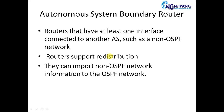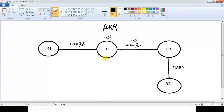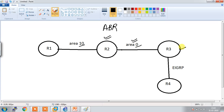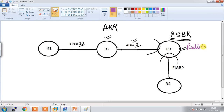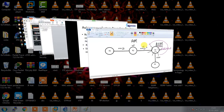When we run redistribution on that router, the external routes are injected into OSPF. For example, R3 is a router running both OSPF and EIGRP. Once I redistribute EIGRP routes into the OSPF domain, this router becomes an ASBR. So ASBR is basically responsible for injecting external routes into the OSPF domain.